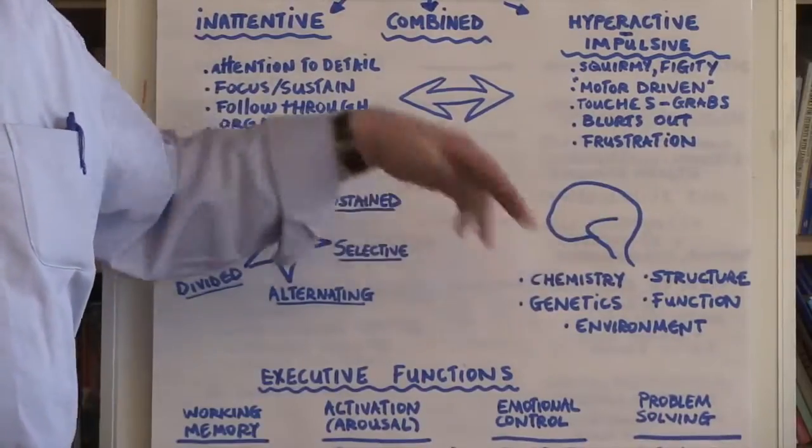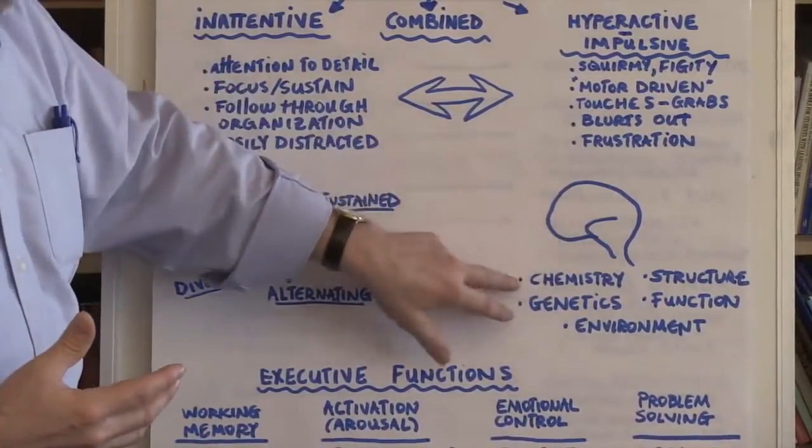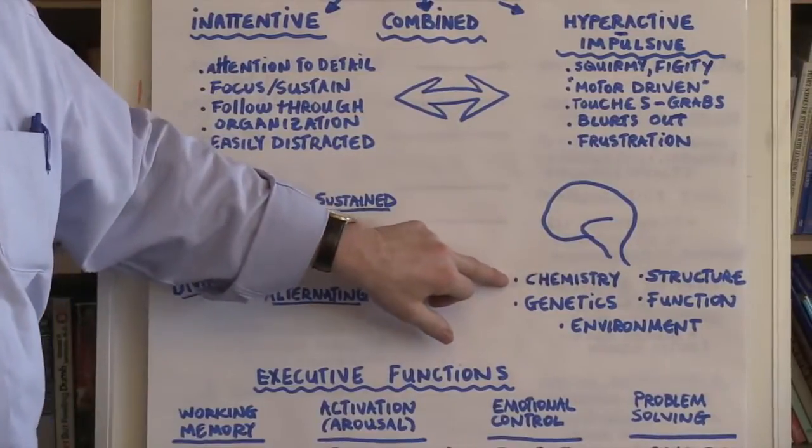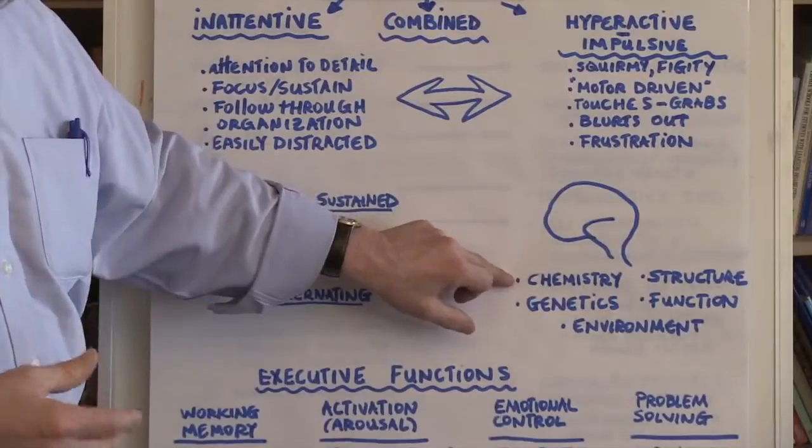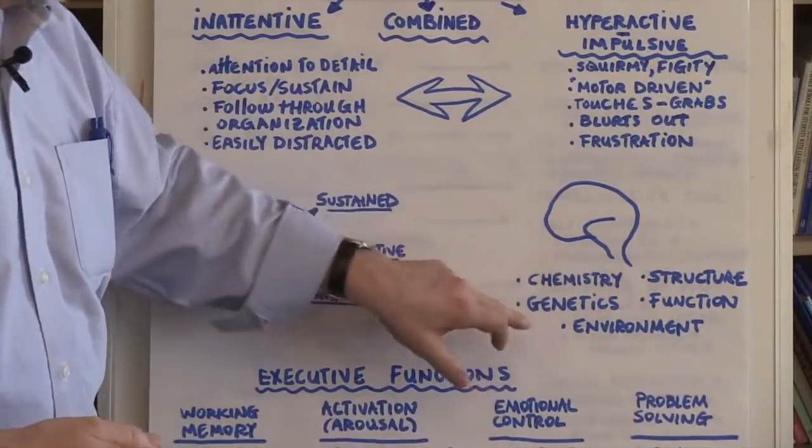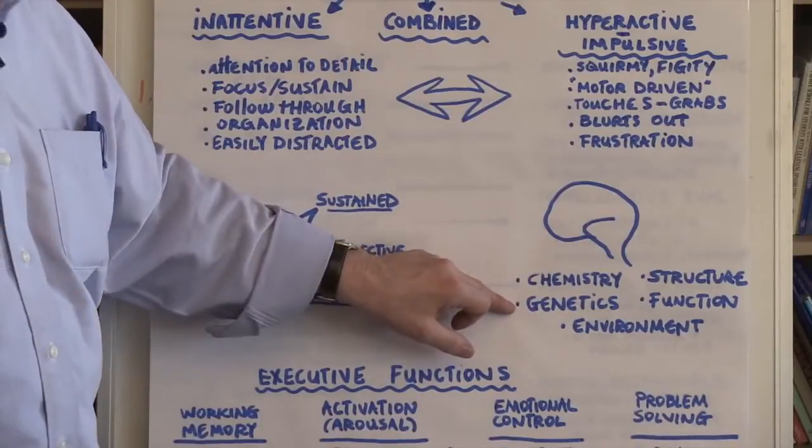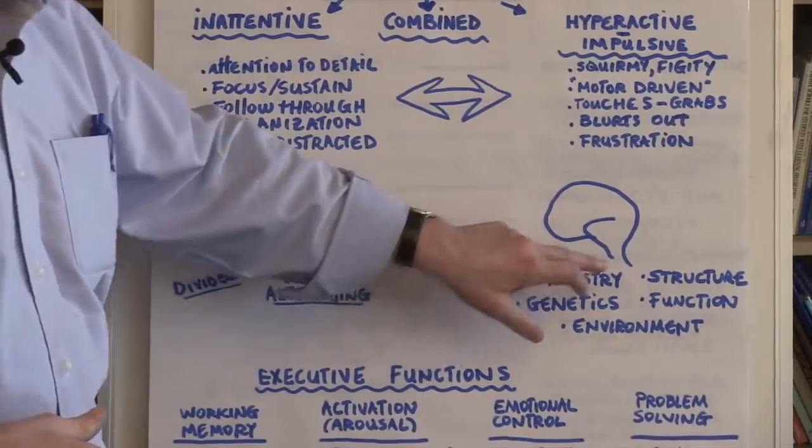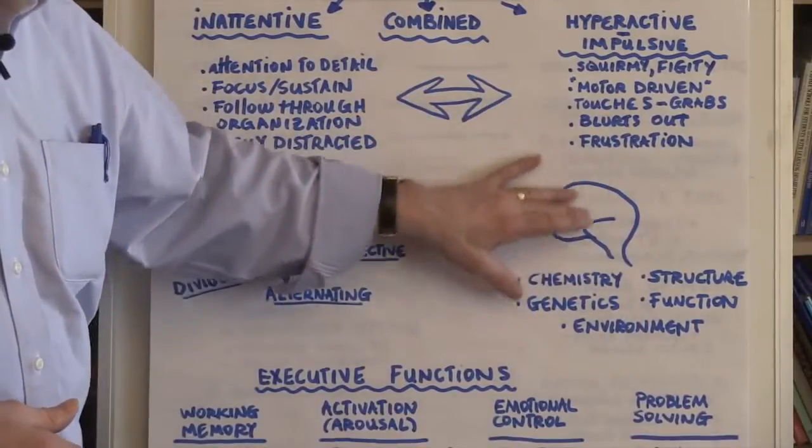When we talk about ADHD, we talk about it happening in the brain. And we understand that there's a chemical or neurobiological neurotransmitter component to ADHD. There may be some genetic aspect to it as well. ADHD, just like LD, tends to run in families.